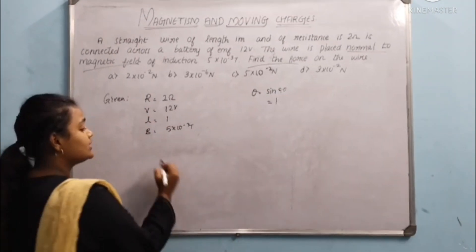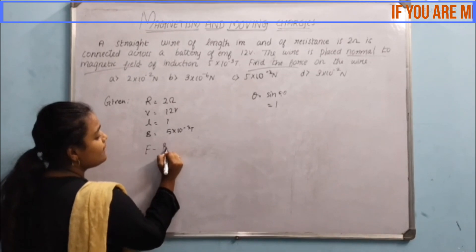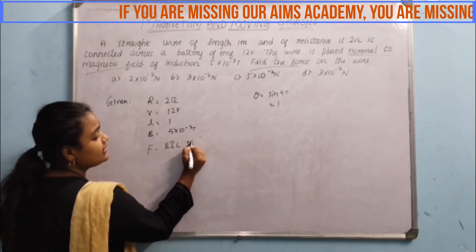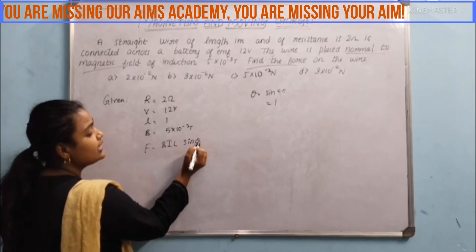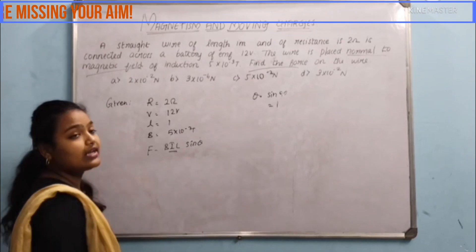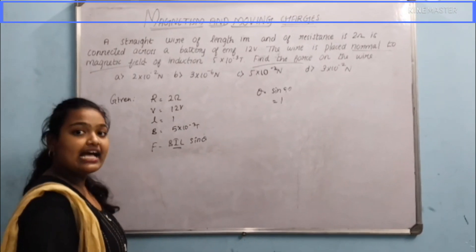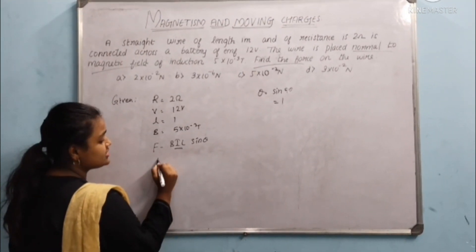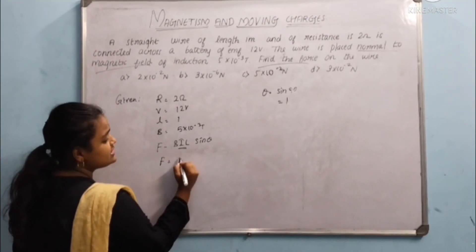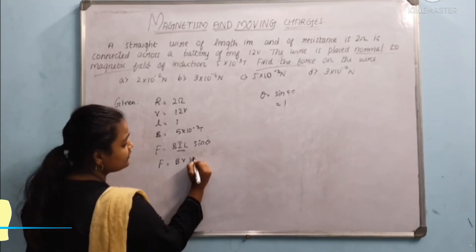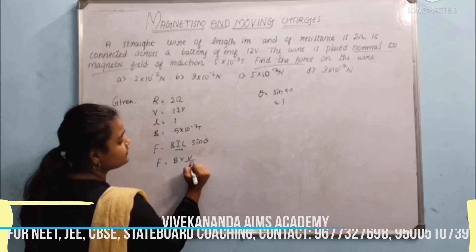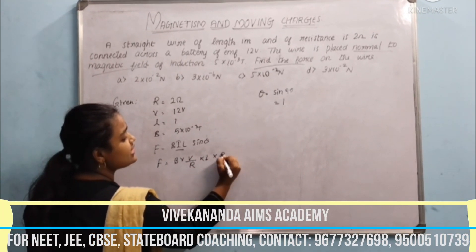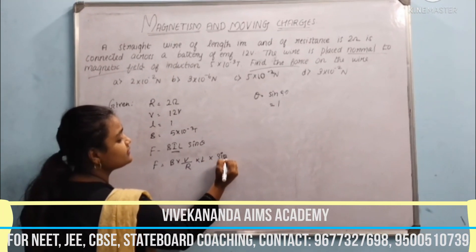The formula for this problem is F is equal to B, I, L sin theta. They didn't give the I value, so we write I as V by R. So the formula becomes F is equal to B into V by R into L into sin 90 degree.